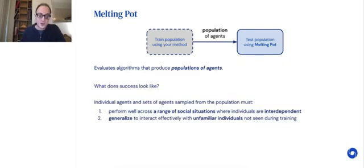What does success look like? Success in Melting Pot means that individuals and sets of agents sampled from the population can perform well across a range of different social situations where the individuals are all interdependent on each other. They can also generalize to interact effectively with unfamiliar individuals that they've never seen during training, as well as familiar individuals. They can be all mixed together in different proportions in different test scenarios.